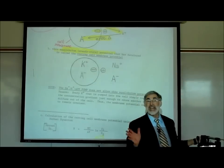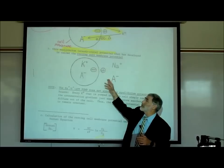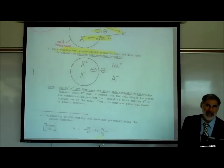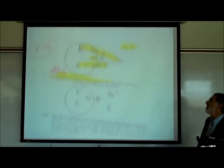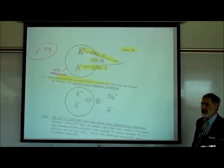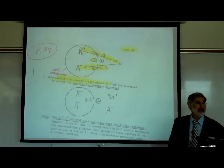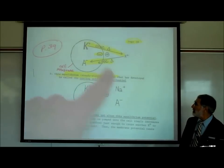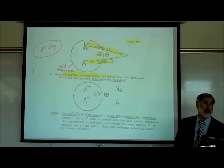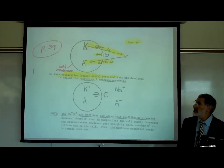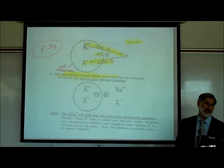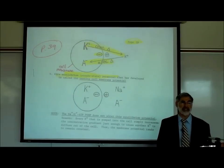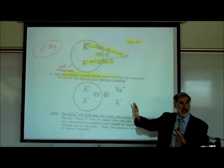We'll assume it's basically a one-for-one exchange. Bringing one positive charged potassium in and kicking one positive charged sodium out doesn't change the electrical polarity. The electrical polarity is really created by the free movement of potassium beyond its concentration gradient. This equilibrium state exists in all cells of the body at rest. It only changes in nerve and muscle cells when other ion channels open.